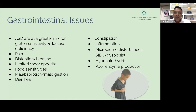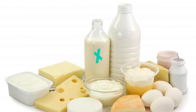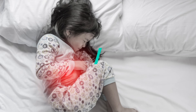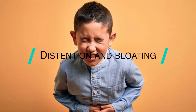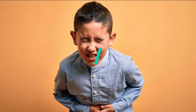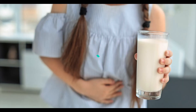Today our topic focuses on gastrointestinal issues and how they affect kids with autism or ASD. It is well documented that these kids may be allergic to gluten or sensitive to lactose due to lactase deficiency. They may have abdominal pain, distension, bloating after eating, limited appetite, or food sensitivities.